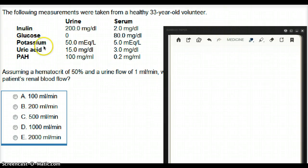There is inulin, glucose, potassium, uric acid, and PAH. And the values for urine and serum are given separately.